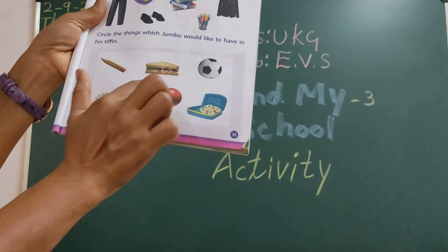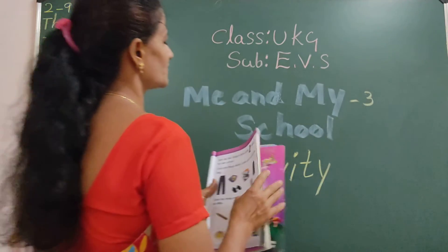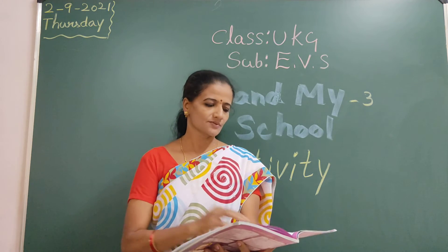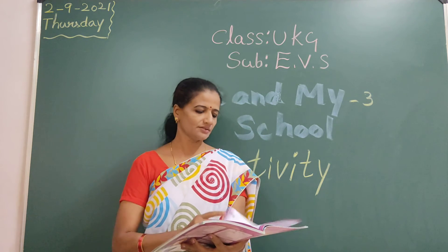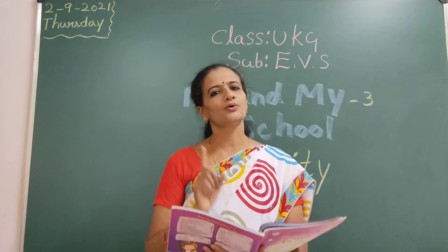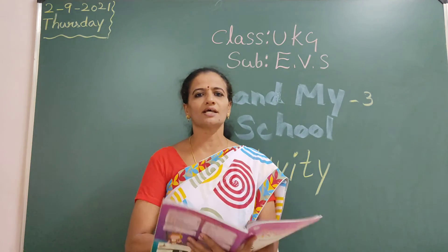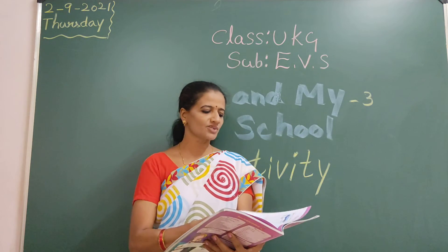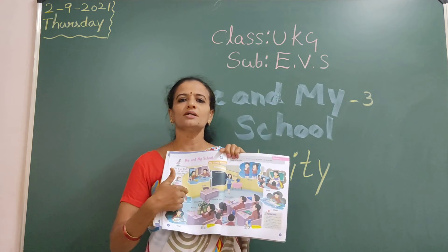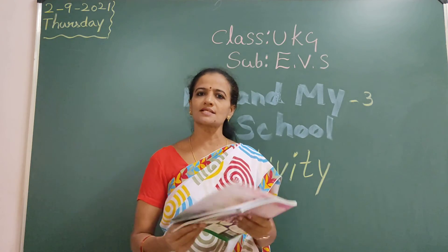So children, all these pages — activities you have to do at home. Understood, children? Six pages you have to do activities at home. Which subject? EVS. And learn every page. Once you have to see the picture and learn this lesson. Understood, children? See you in the next class. Thank you, children.